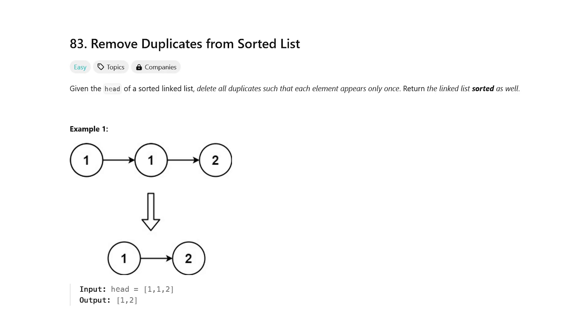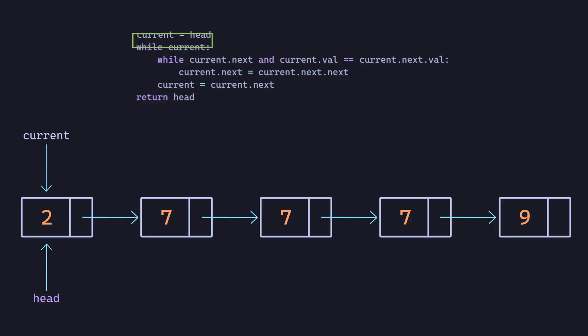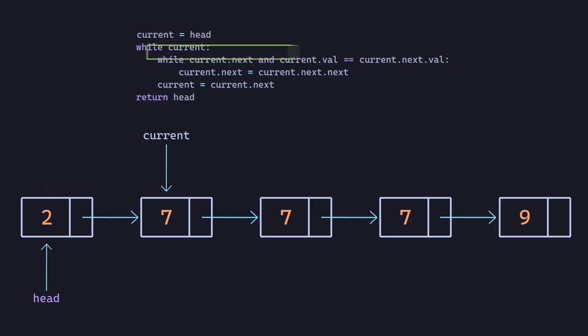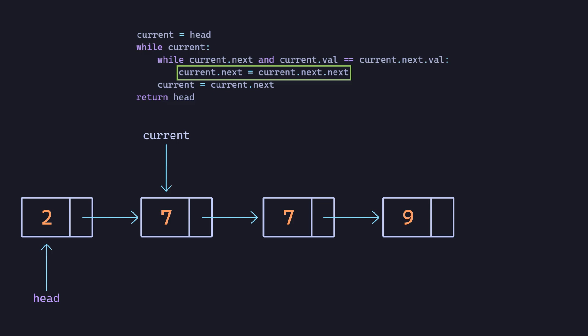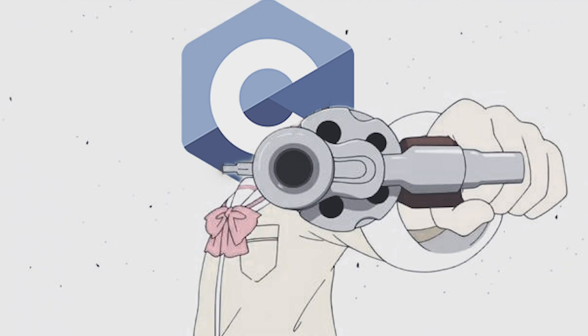A good problem to get started in this category is Remove Duplicates from Sorted Lists. The key here is to iterate through the list and check if the current node is equal to the next node. If it is, you just skip to the next node. Also, don't forget to free up the memory if you're using C.